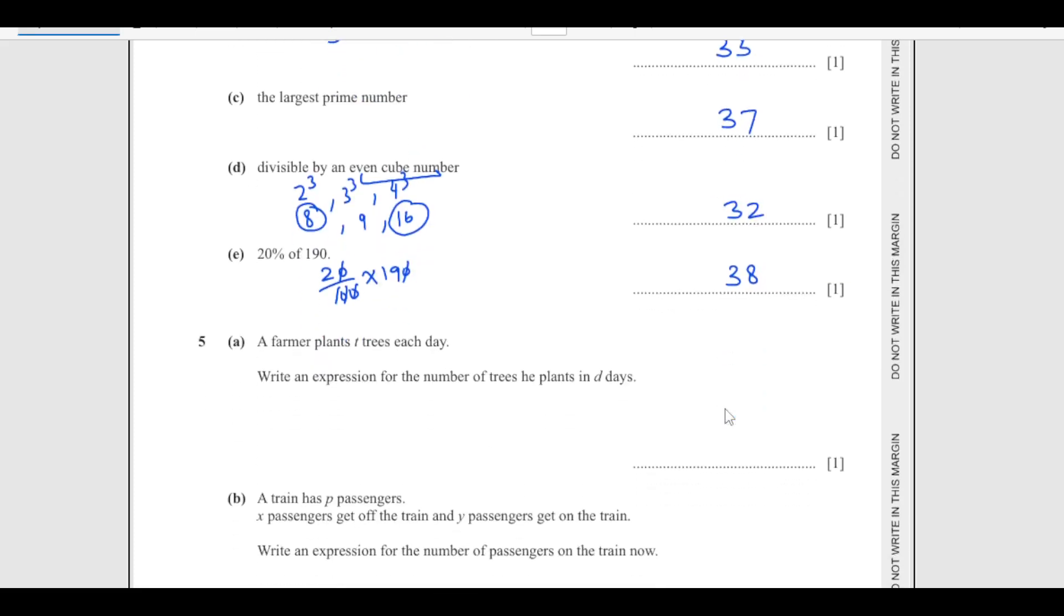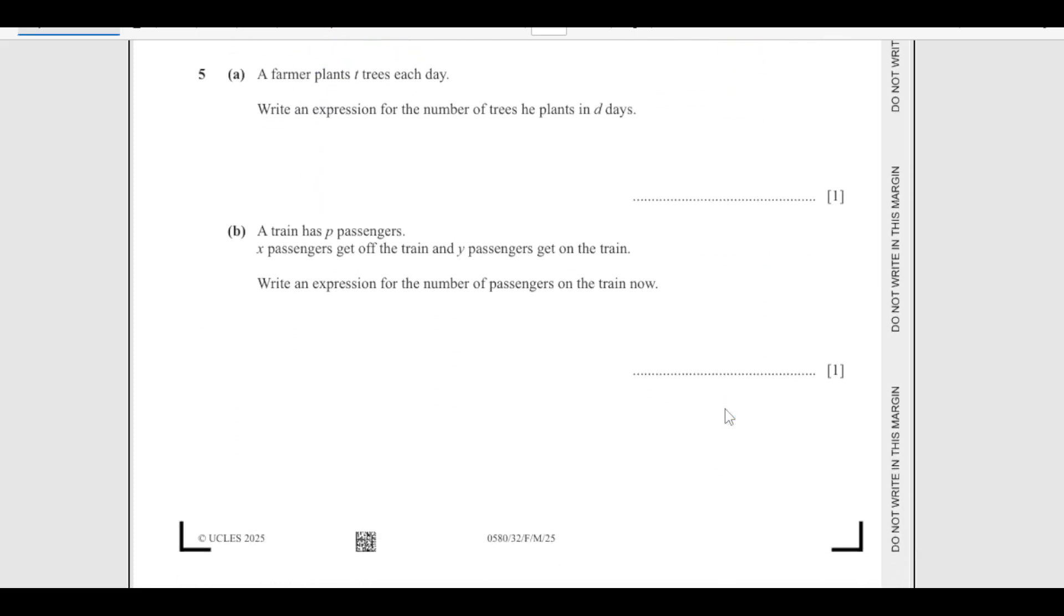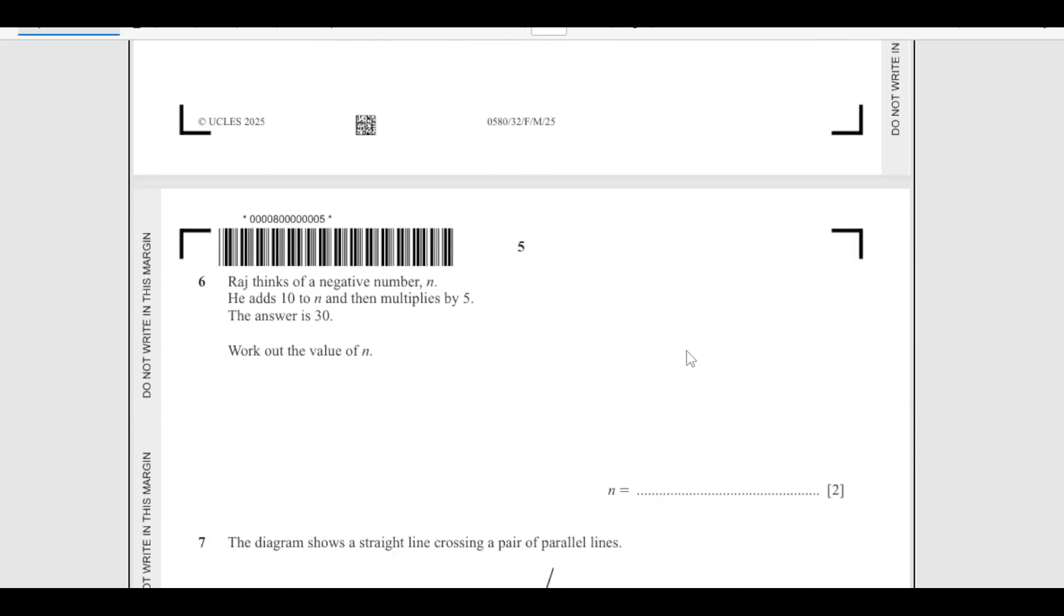Number 5: A farmer plants T trees each day. In one day, T trees are planted. Write an expression for trees he plants in D days: D times T, so it is DT or TD. A train has P passengers, X passengers get off: P minus X. And then Y passengers get on: plus Y. So this is P minus X plus Y.